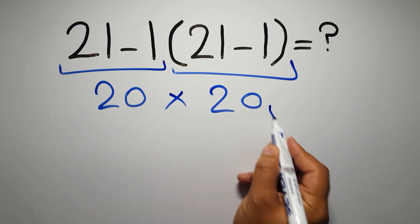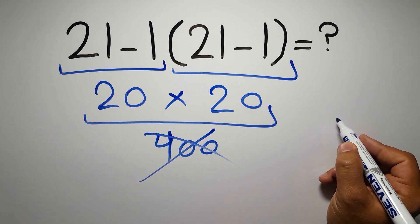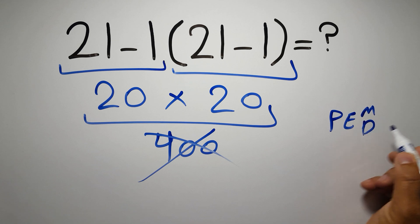But this answer is not correct because according to the order of operations, first we have to do parentheses, then exponents, then multiplication or division, and finally addition or subtraction.